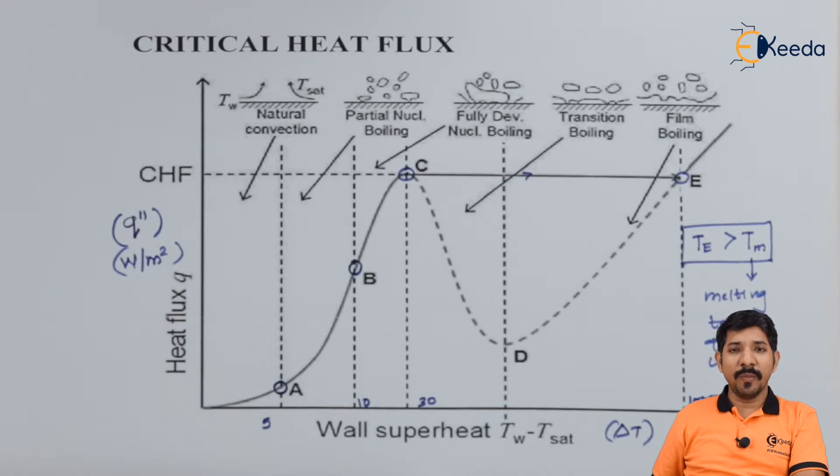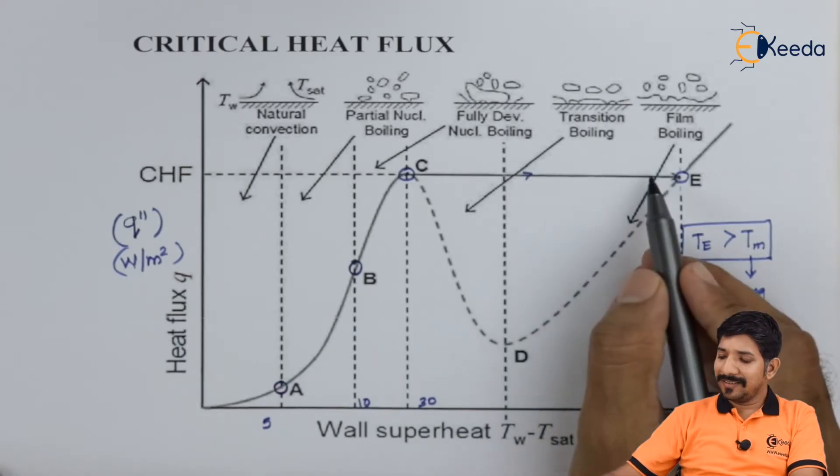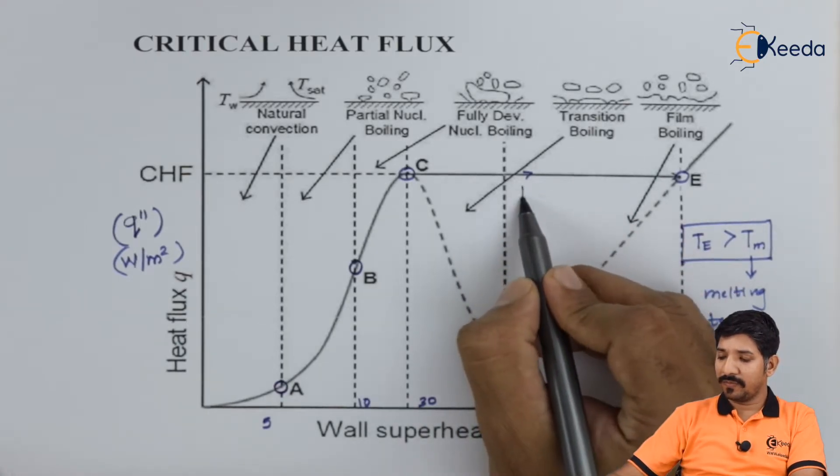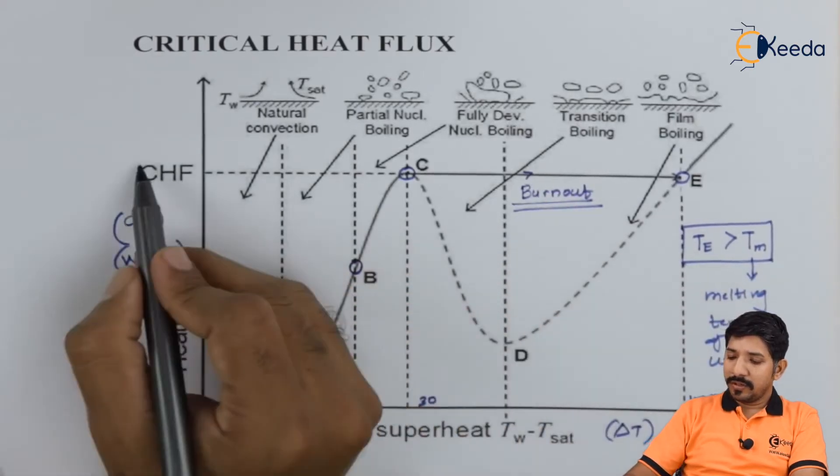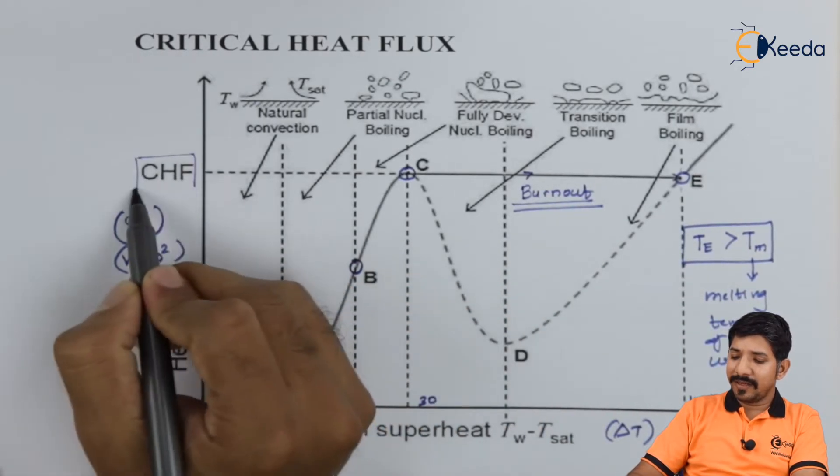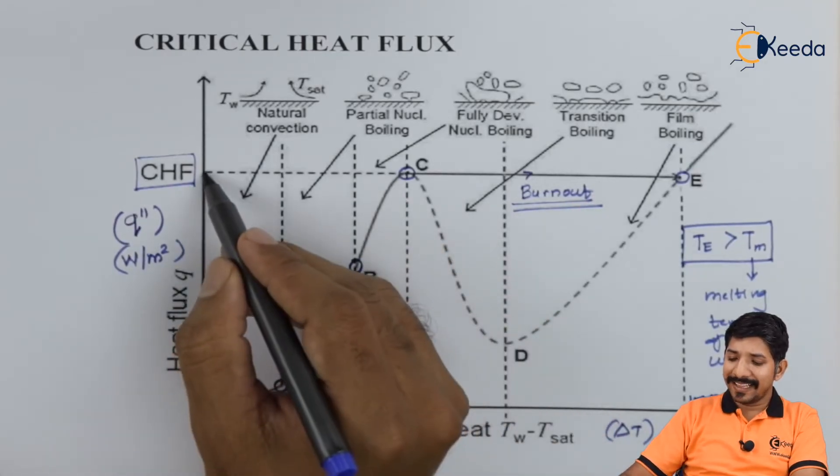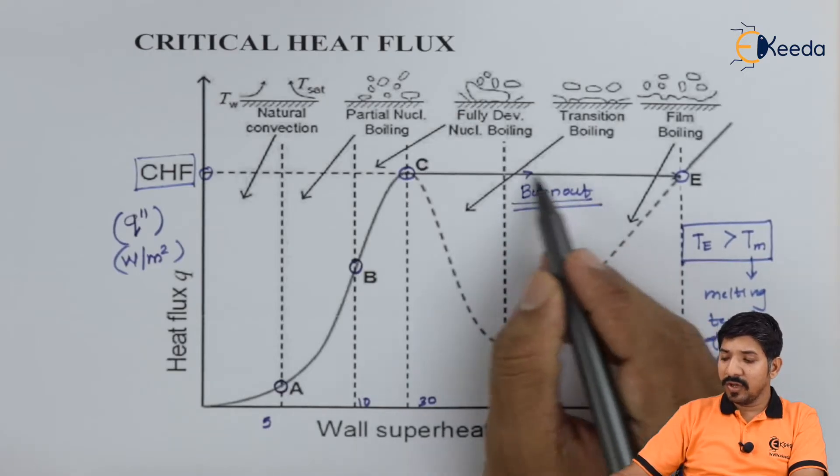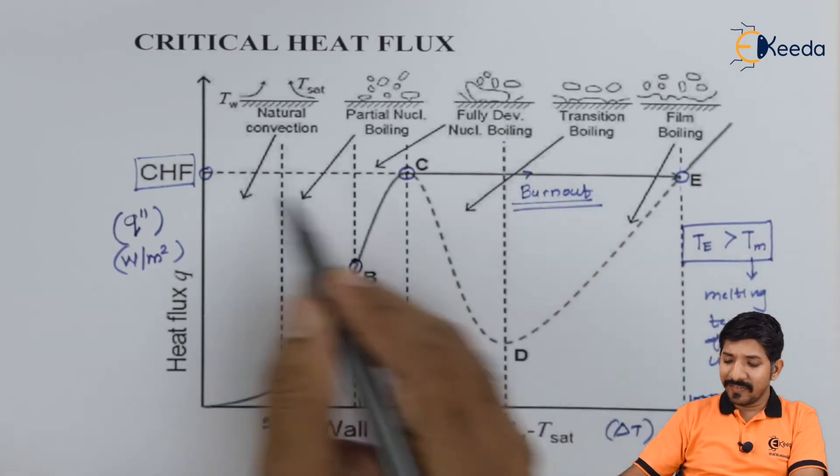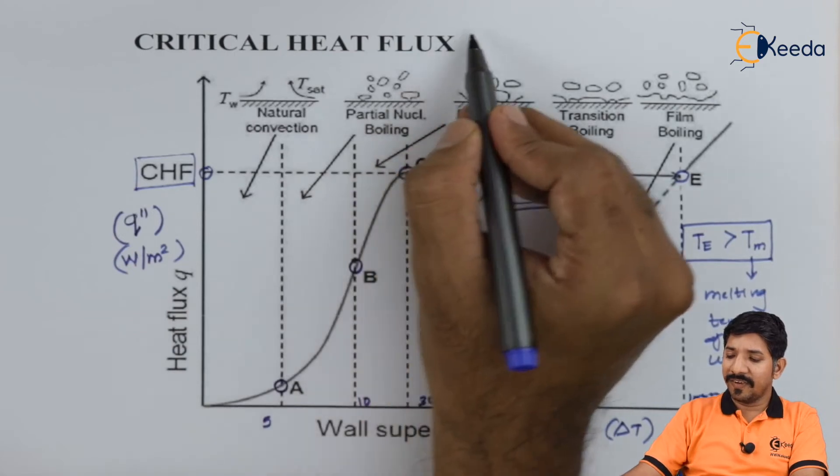Now because of this small melting, there might be a possibility that this wire itself can get broken. That is why they call this a burnout scenario. The name for the same is critical heat flux. Why critical? Because at this heat flux, there is a possibility of burnout of a given wire. That is why they call this critical heat flux.